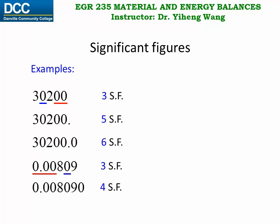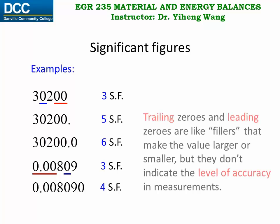Hopefully by now you understand more what significant figures mean. As you might notice, trailing 0s and leading 0s, those insignificant figures, are like fillers. They are there in order to indicate the magnitude of this number. Is it a big number or is it a very small number? But they do not indicate the level of accuracy in measurements.